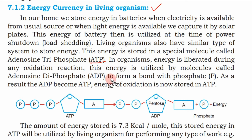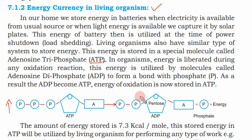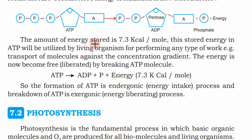The energy stored in ADP when it forms a bond with phosphate to become ATP is 7.3 kilocalories per mole.